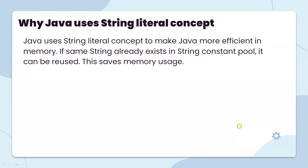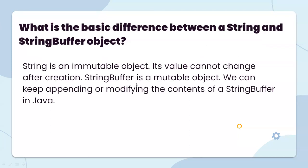Why does Java use the String literal concept? Java uses the String literal concept to make Java more efficient in memory. If a String already exists in the String constant pool, it will reuse the same memory. What is the basic difference between a String and a StringBuffer object? String is an immutable object — its value cannot be changed after creation. StringBuffer is a mutable object; we can keep updating, appending, or modifying the content of a StringBuffer in Java.